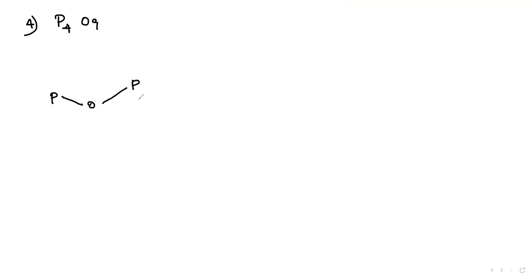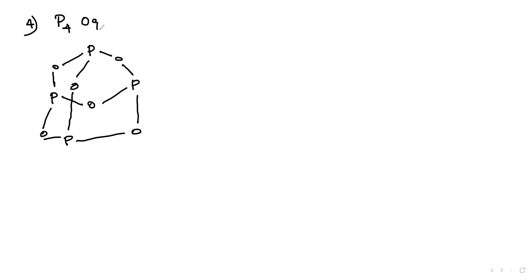The fourth structure is P4O9. Same approach — make the basic adamantane unit P4O6 first: phosphorus, oxygen, phosphorus, oxygen, phosphorus, oxygen alternating. Then add three P=O double bonds — one, two, three. This is the structure of P4O9.